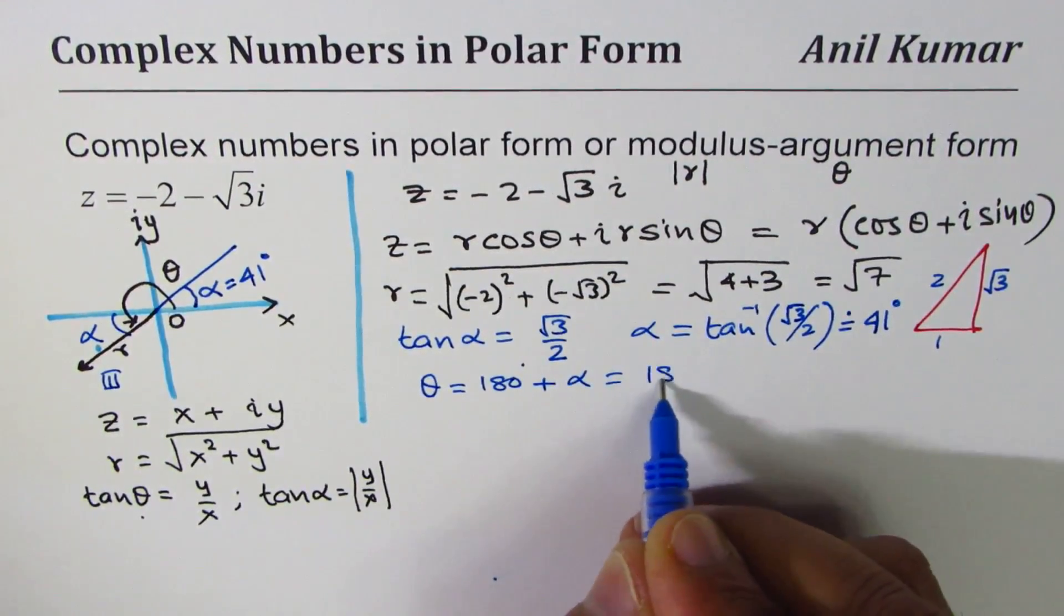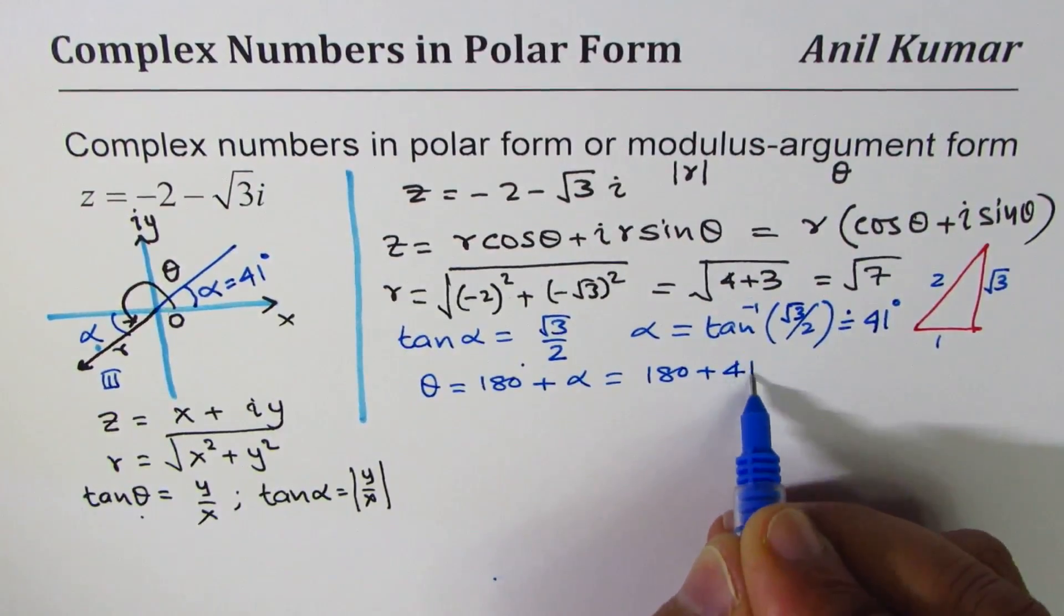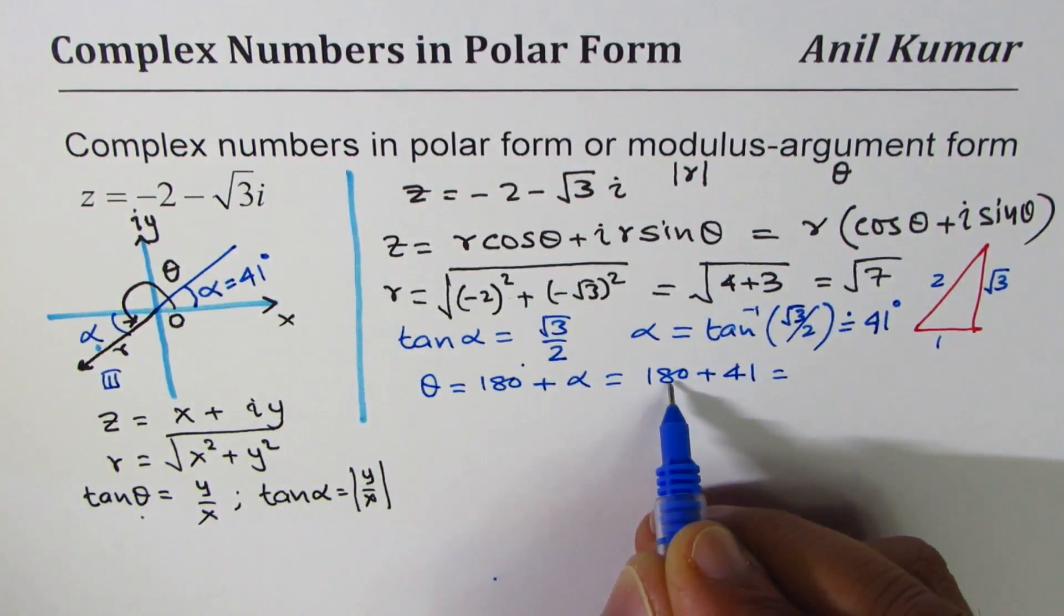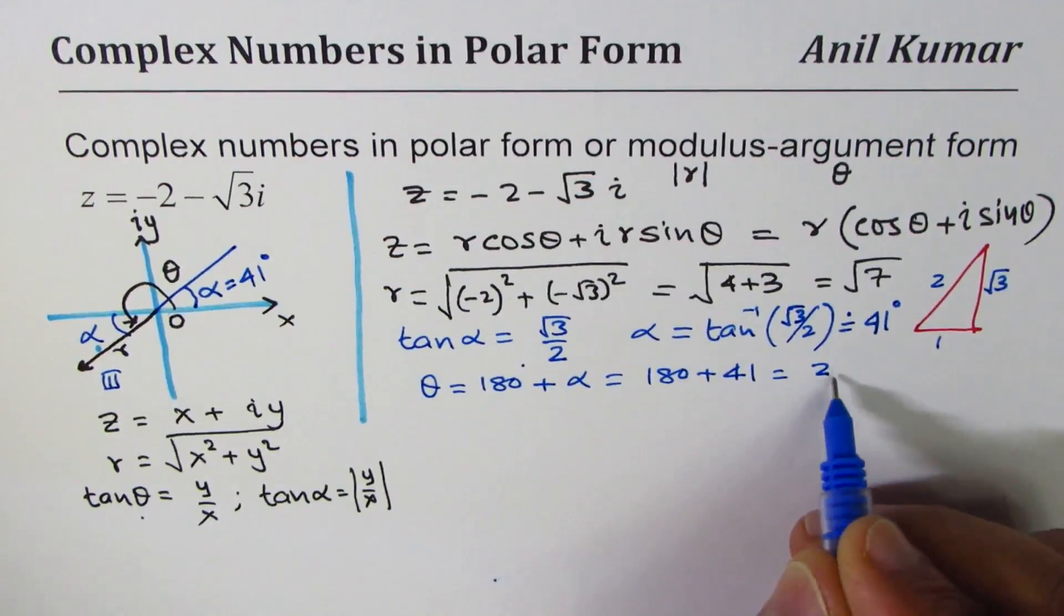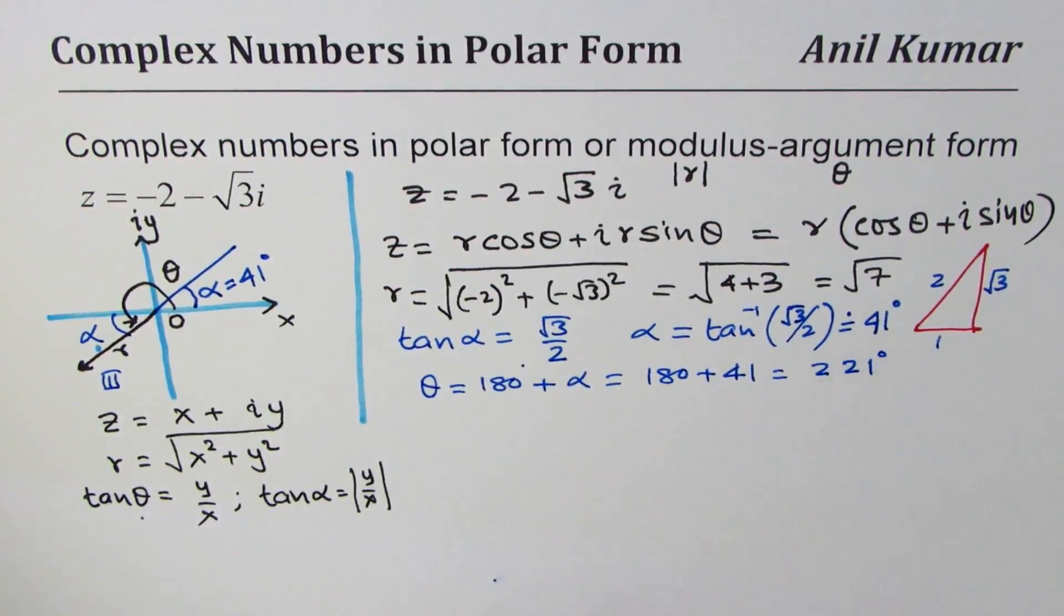So it is 180° plus 41°, so 8 plus 4 is 12, so 221°. So you get 221° as θ.